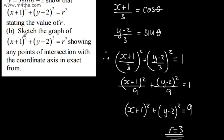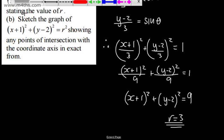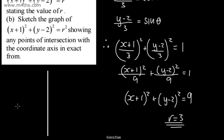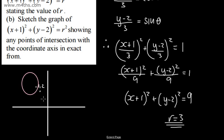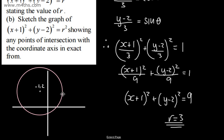Part B: sketch (x+1)² + (y-2)² = R², showing intersections with the coordinate axes in exact form. This is a circle with centre (-1, 2) and radius 3. Let's draw this up — centre at (-1, 2), radius 3, giving a rough sketch to represent what's going on.